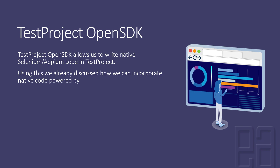That's the power of test project's open SDK and it has got a lot of features which we have already discussed, like Selenium page object model support, Cucumber support, Extent reporting support, and TestNG support — all discussed when we covered test project's open SDK in Java language binding.